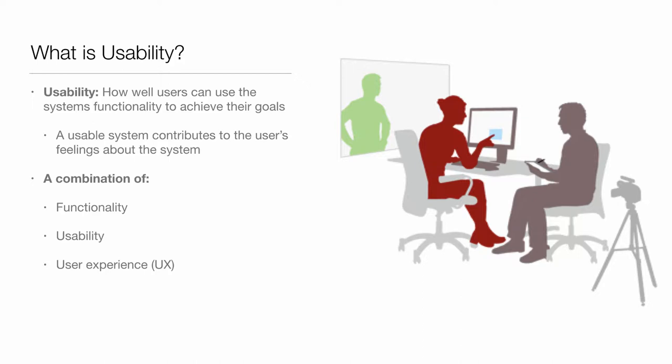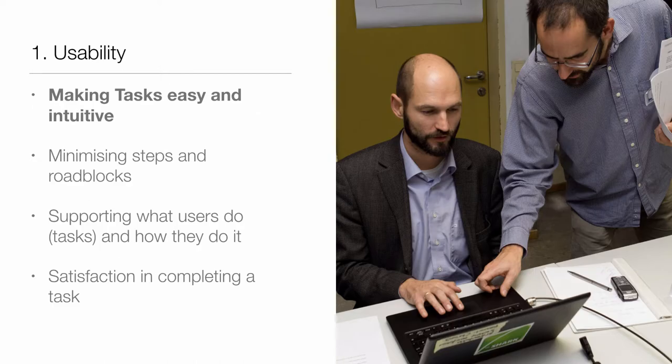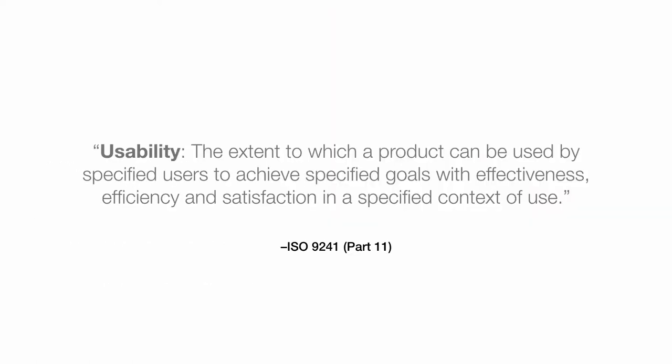So that really is what usability is — it's a lot deeper than the simple things. You could say it's making tasks easy, intuitive, minimising steps, removing roadblocks, supporting the tasks that users do and how they do them, and giving them great satisfaction. ISO 9241 describes usability as the extent to which a product can be used by specified users to achieve specified goals, with effectiveness, efficiency, and satisfaction in specified contexts of use.